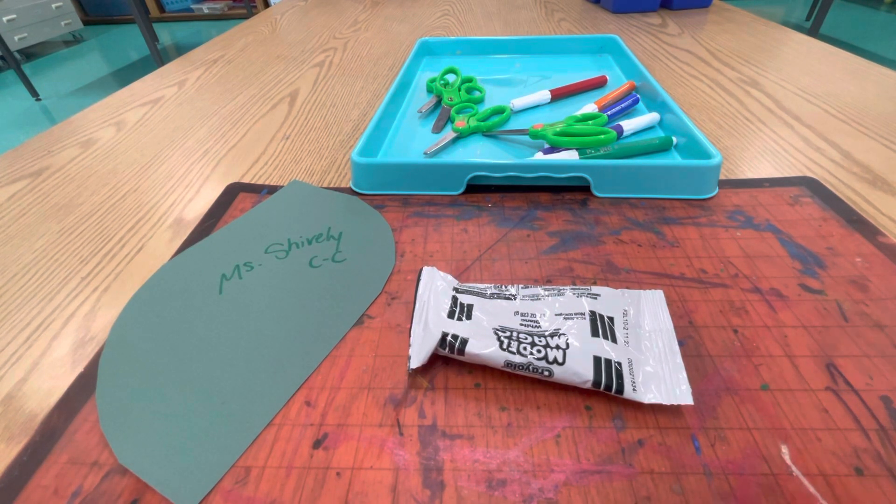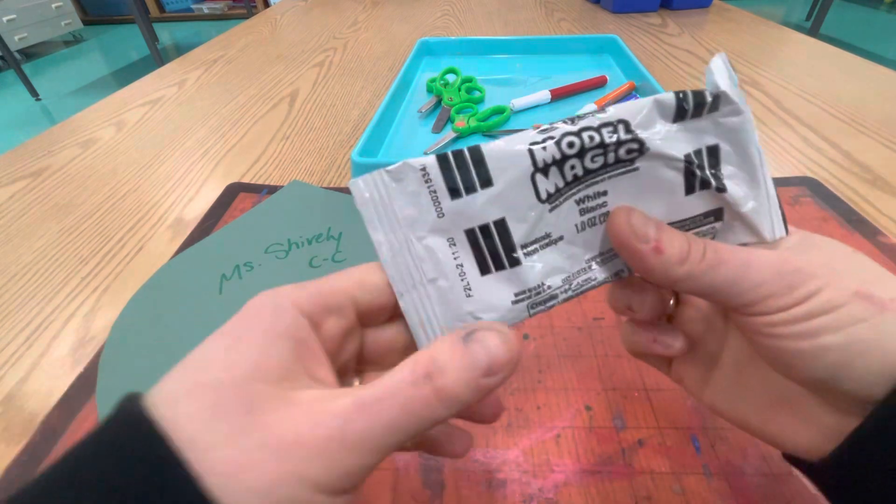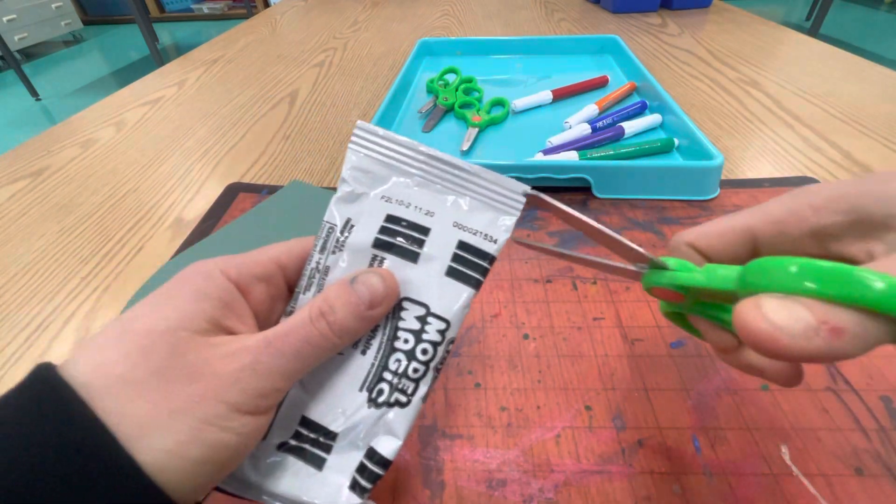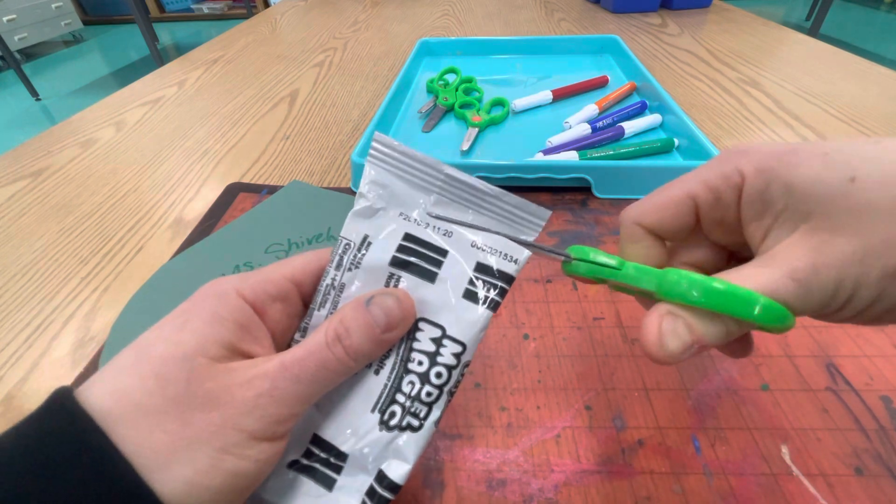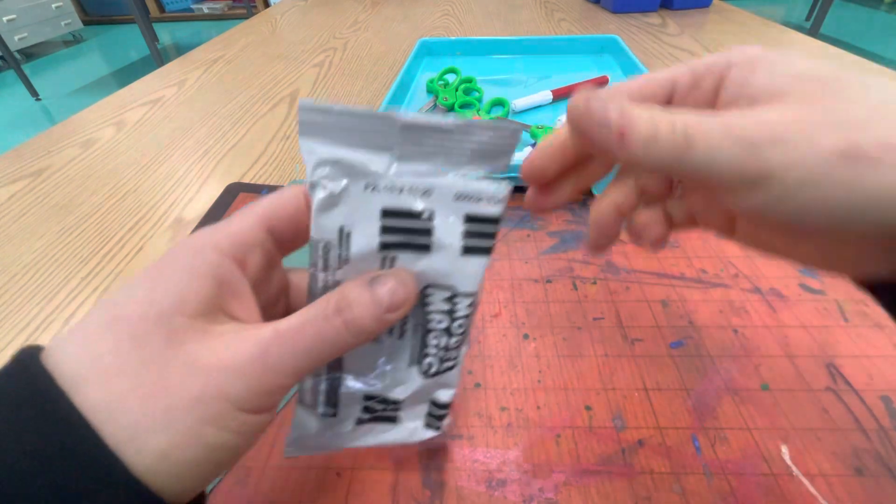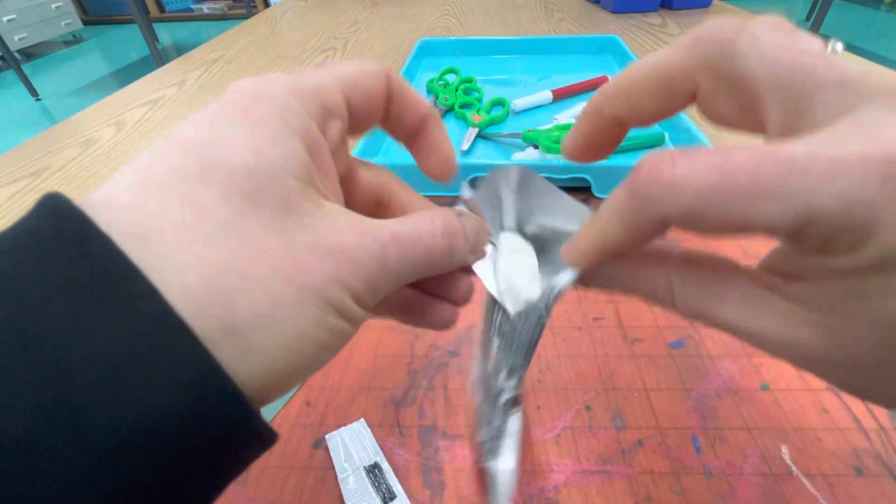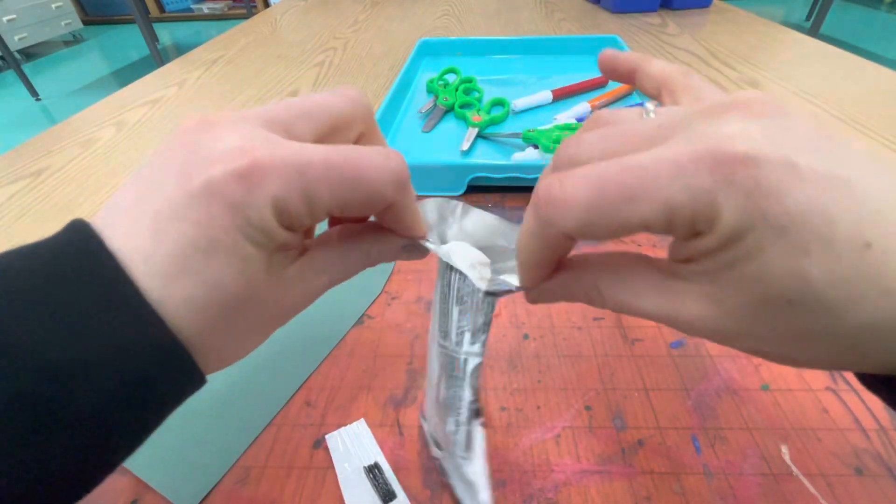Hello artists, now it's time for you to make your Model Magic caterpillar. You're going to take your package and cut the top just like that. That's really all you need to do. Then you can open it up. You're going to need to tear it open because it's hard to pull it out, so it's easier just to tear the whole thing open like this and then pull it.